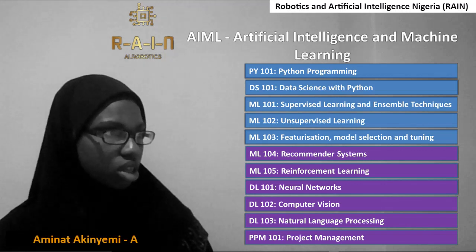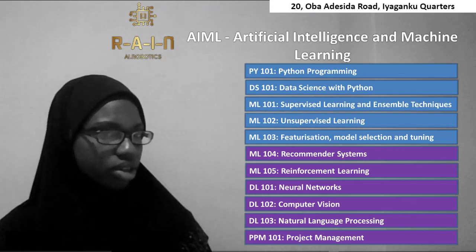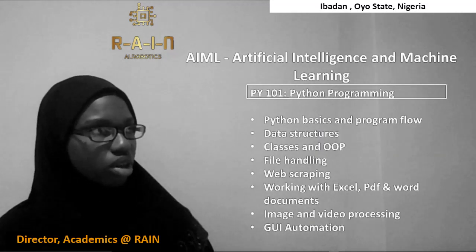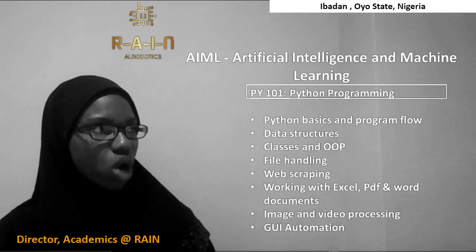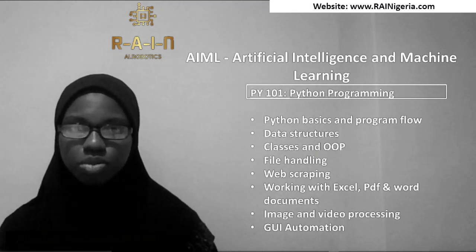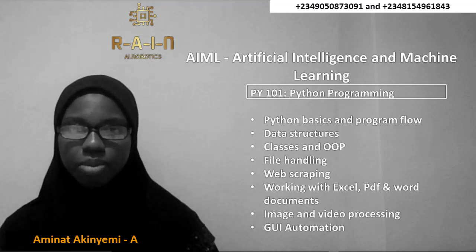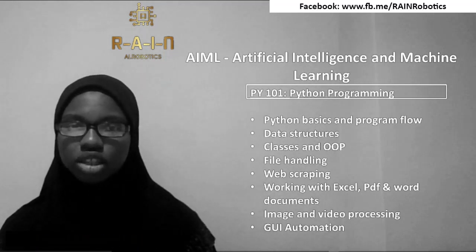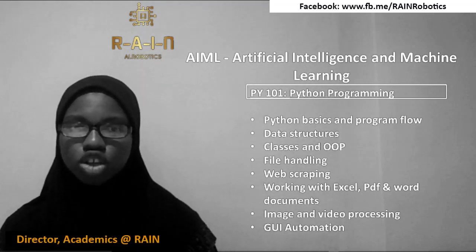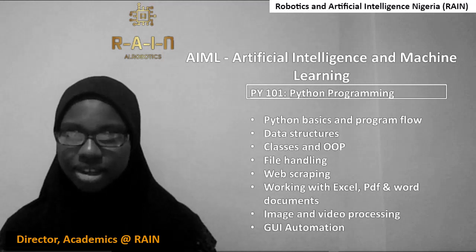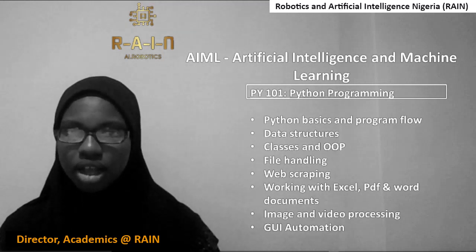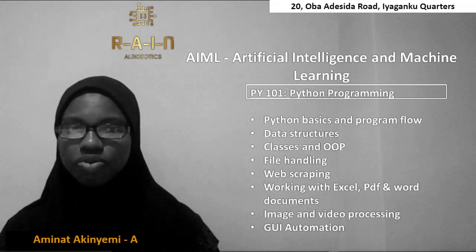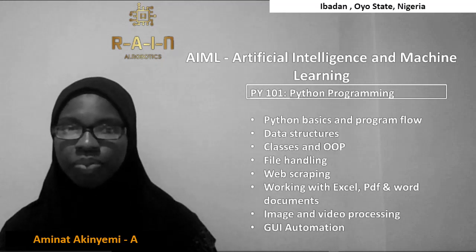The courses in blue are the first semester courses and the courses in purple are the second semester courses. PY101: in this module you'll be taught Python programming from beginner level to advanced level. At the end of this module you would have learned how to automate tedious tasks — a skill particularly useful in data analysis and machine learning.